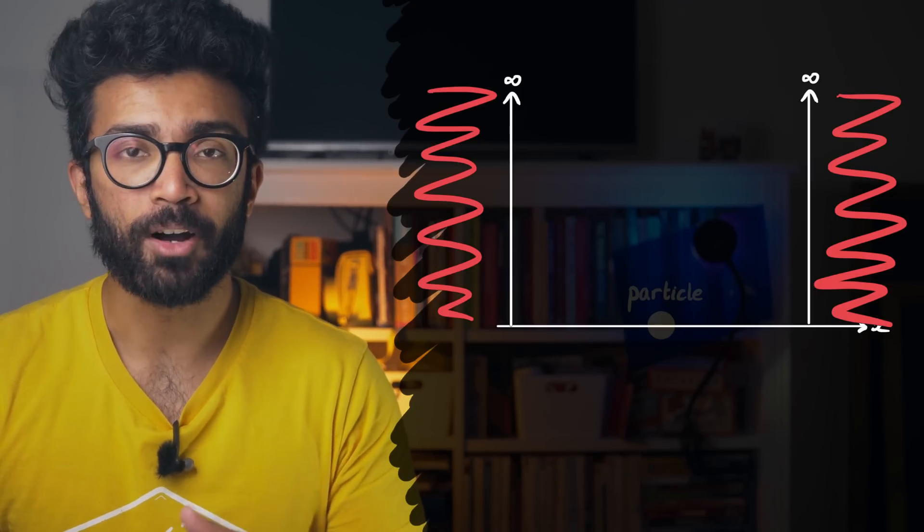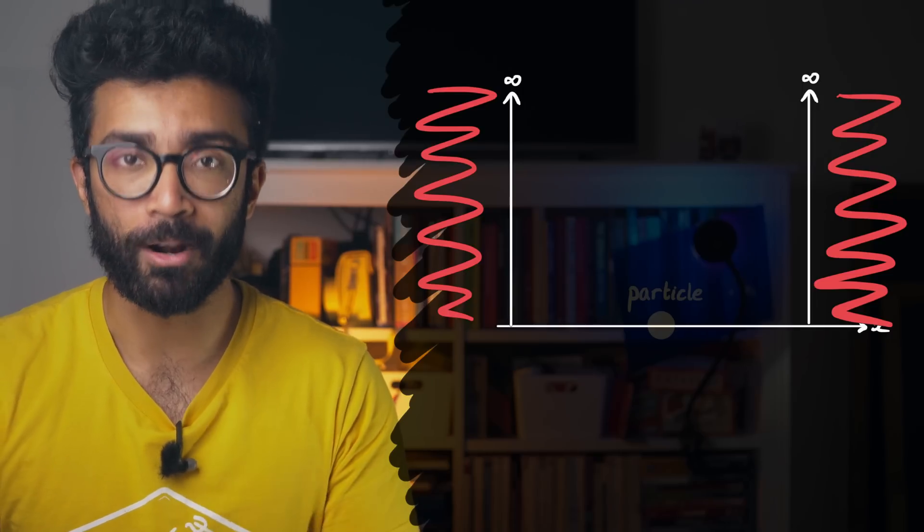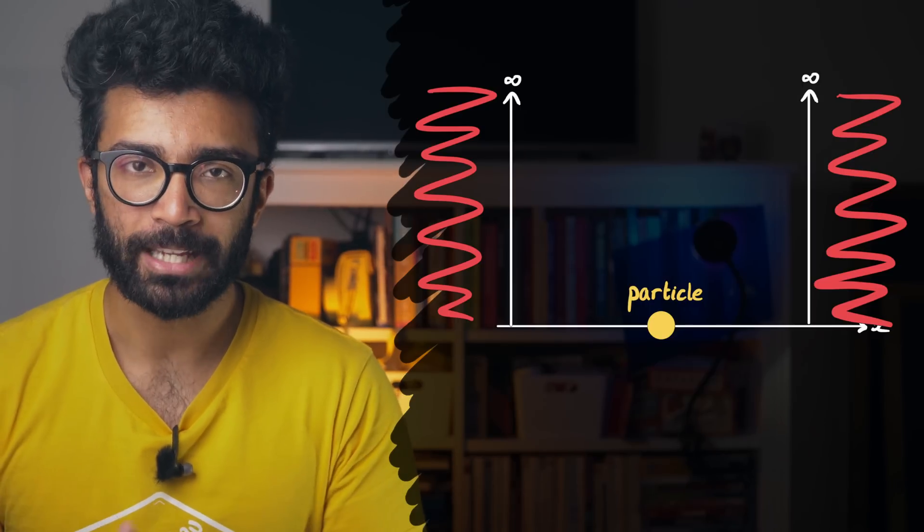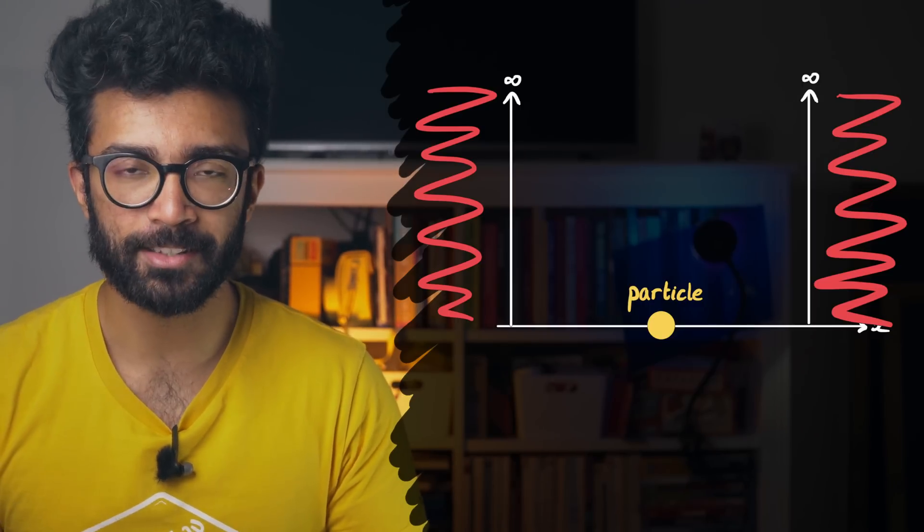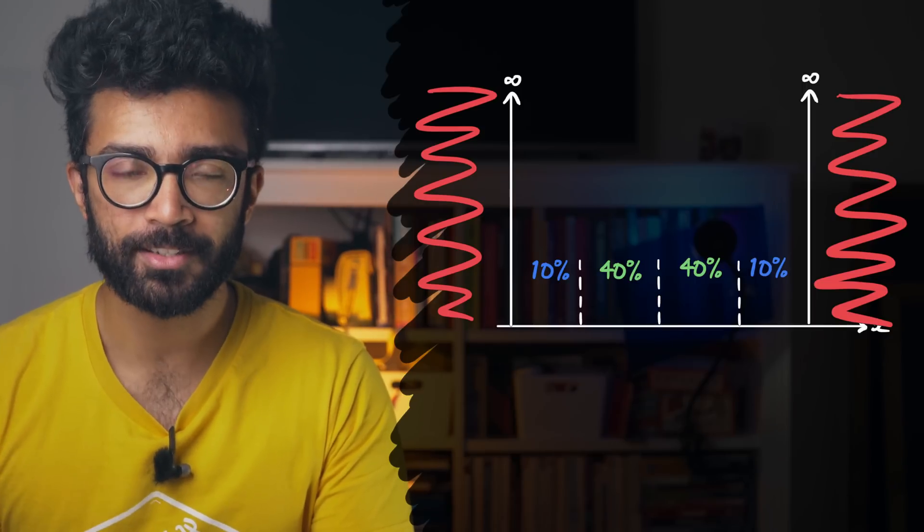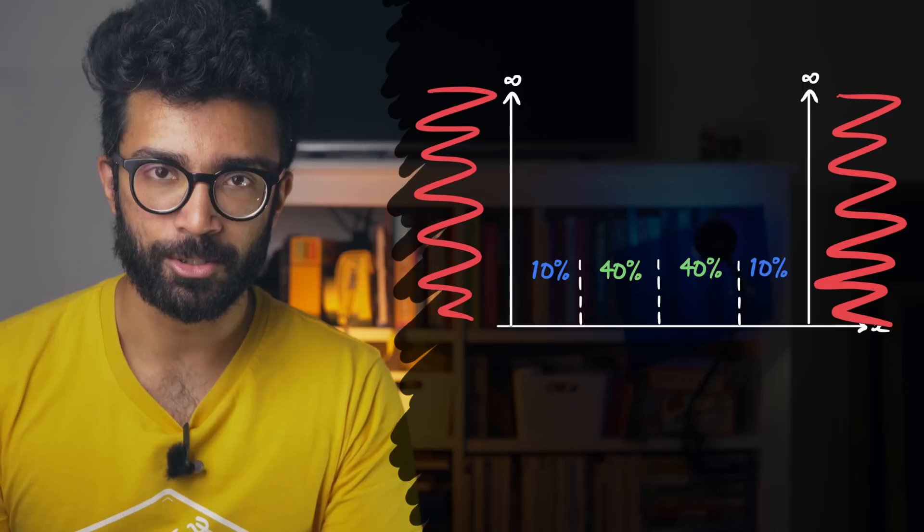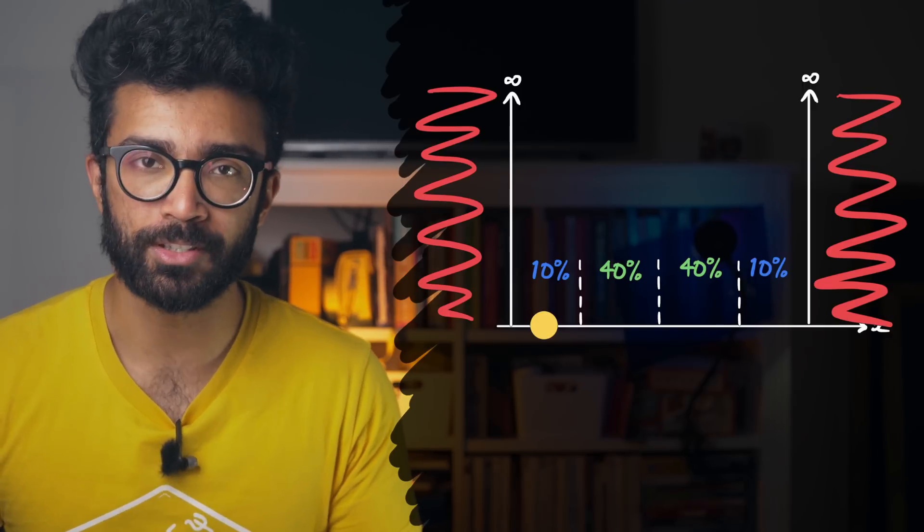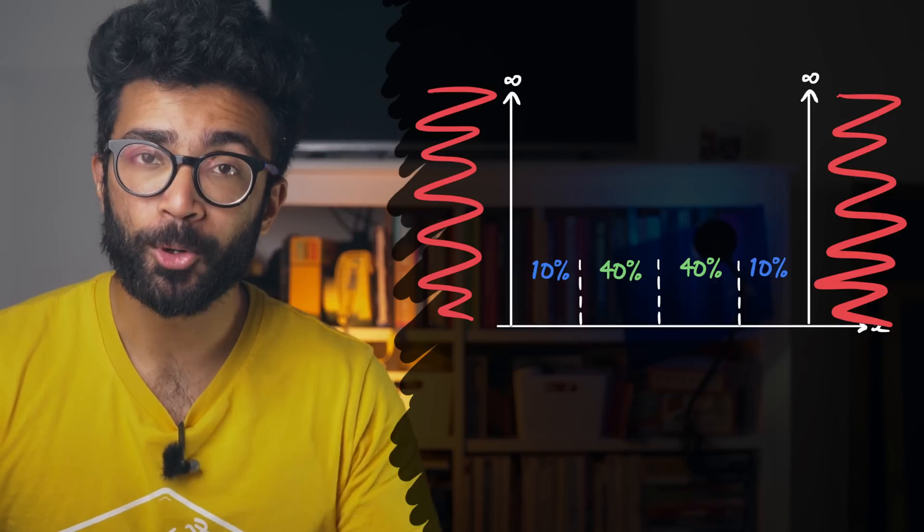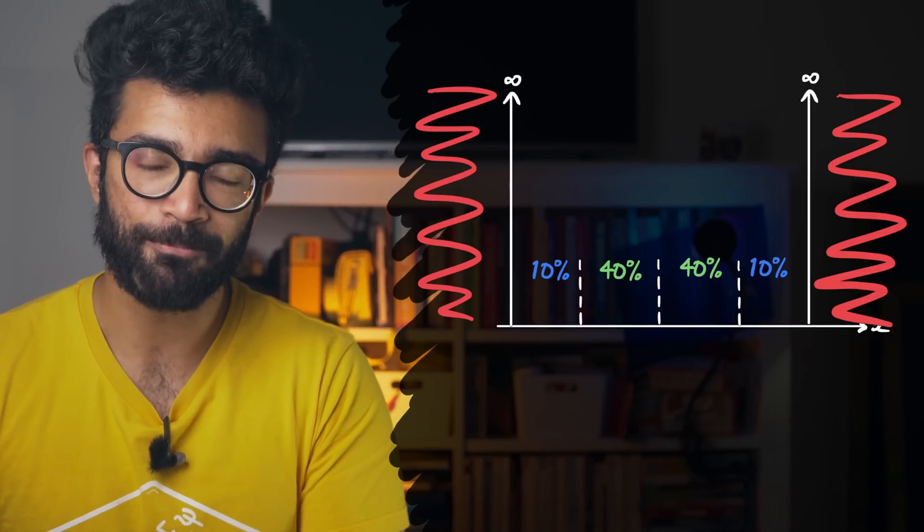Now in reality the particle is somewhere in this region, but we don't yet know where it is. We need to make a measurement to find out where it is. In quantum mechanics we can actually calculate the probability of finding our particle in different regions before we actually make the measurement. And when we do make the measurement, the particle could be found in any of the regions that have some non-zero probability. But of course, it's more likely that the particle will be found in regions where the probability is higher.